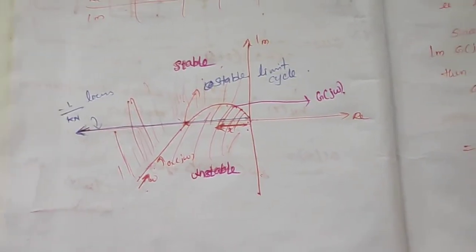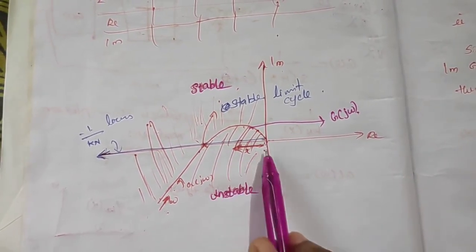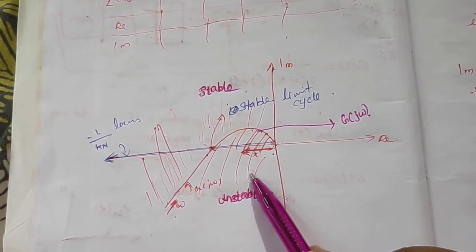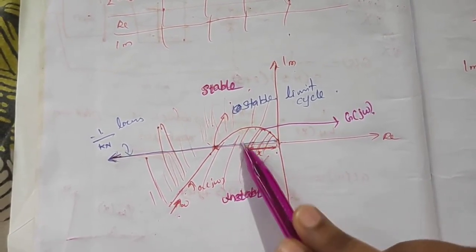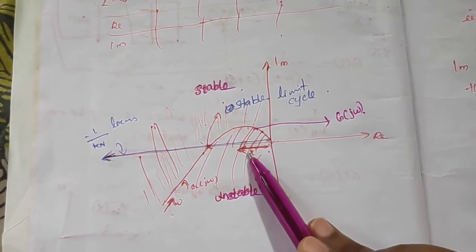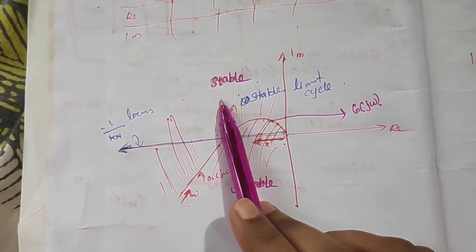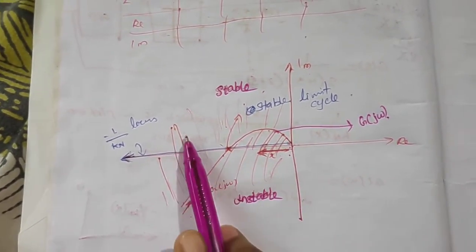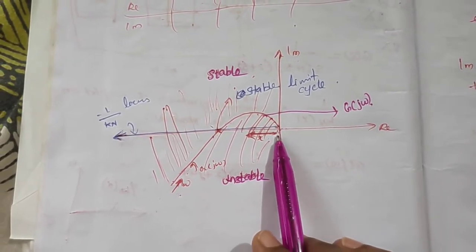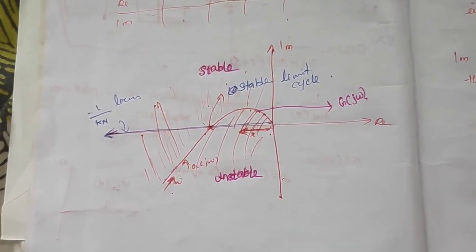To determine whether the limit cycle is stable or unstable, we examine the direction of the minus 1 by KN locus. In the region where G(jω) completely encloses the minus 1 by KN locus, that region is unstable. In the region where the minus 1 by KN locus is completely outside G(jω), that region is stable. Since the minus 1 by KN locus travels from the unstable region to the stable region, this is a stable limit cycle.